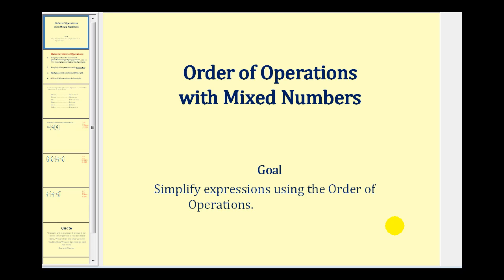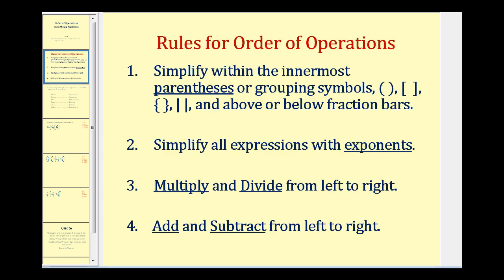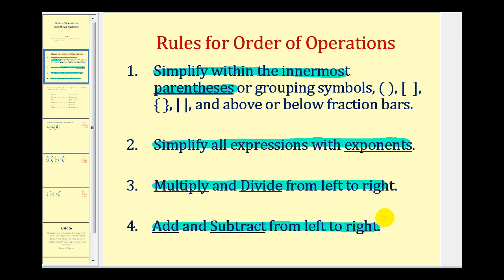Welcome to a video that will find examples of simplifying expressions using the order of operations with mixed numbers. Let's do a quick review of the order of operations. We'll first simplify the innermost parentheses or grouping symbols, then simplify all expressions with exponents, then multiply and divide from left to right, and finally add and subtract from left to right.